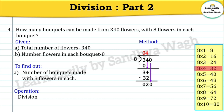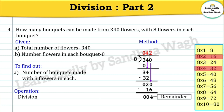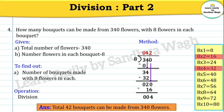Bring down the next digit 0, giving 20. Do we have 20 in the 8s table? No, but we have 16 — 8 twos are 16, so write 2 as the quotient. Subtract 16 from 20, giving 4. So our quotient is 42 and remainder is 4. The final answer is 42 bouquets can be made from 340 flowers.